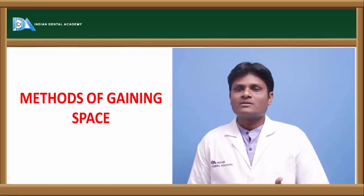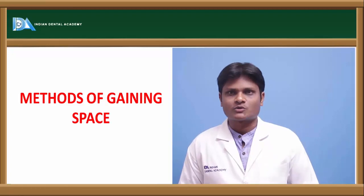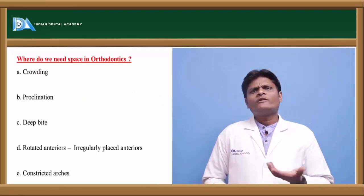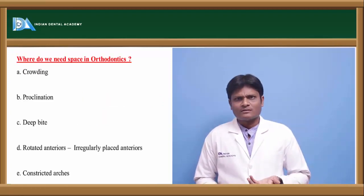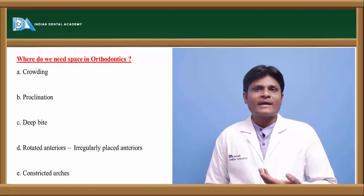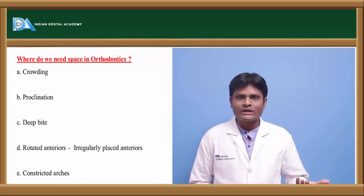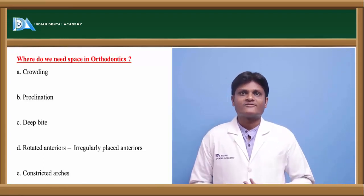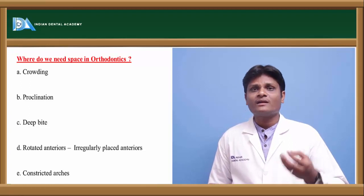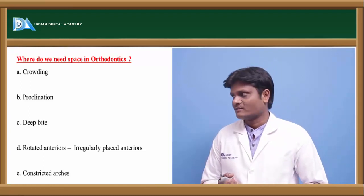Today we are going to discuss about methods of gaining space in orthodontics. The major reason behind the occurrence of malocclusion — whether crowding, spacing, or proclination — is said to be a deficiency or discrepancy between tooth material and arch length or arch size.